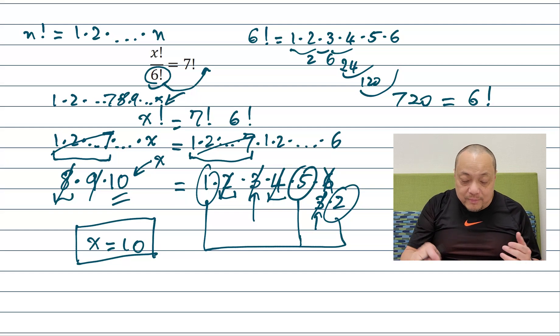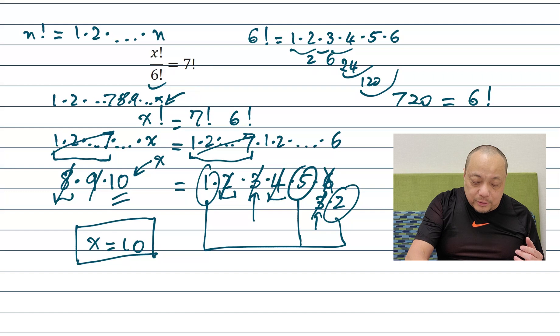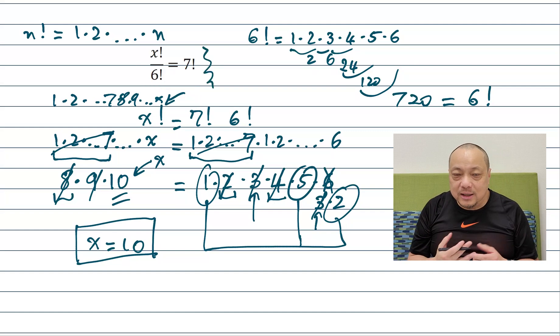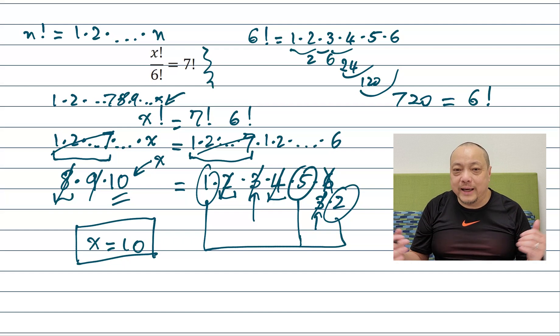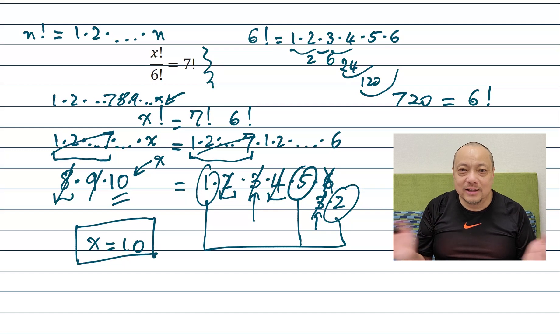Right so we have a problem that starts out as a fancy algebra problem with exclamation marks and everything, but it turns out to be just basic arithmetic multiplying and dividing and canceling. So that's why I thought it's such a cute problem.